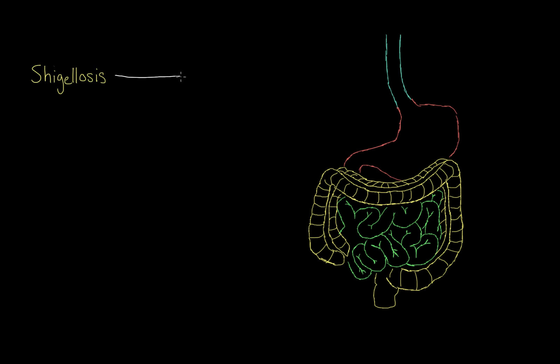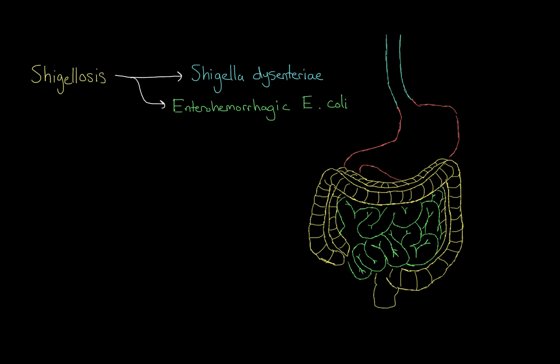Shigellosis is often caused by bacteria of the Shigella genus. One of the most common is Shigella dysenteriae. Another bacteria that can cause it is called Enterohemorrhagic E. coli. These are just fancy names for different types of bacteria, but in general, both of them produce a toxin known as the Shiga toxin, named after the Japanese scientist who discovered it, Kiyoshi Shiga.